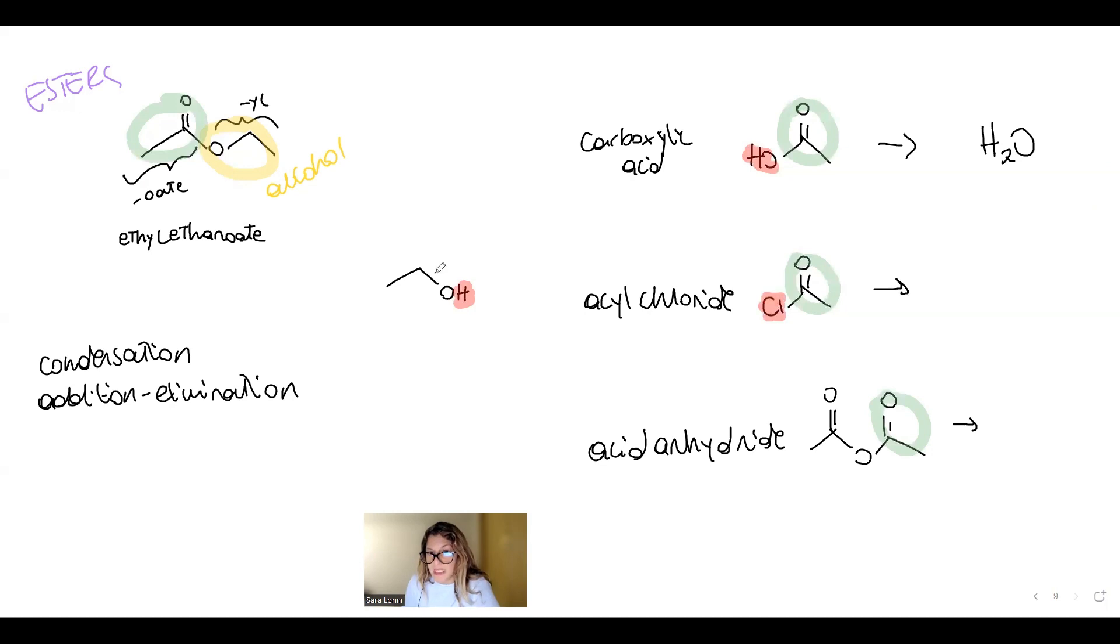For acyl chloride it would be hydrogen and the Cl, so HCl is the side product. For acid anhydride, this whole thing would react with hydrogen. Guess what that is? It's a carboxylic acid. So carboxylic acid would be the side product of the reaction between alcohols and acid anhydride.